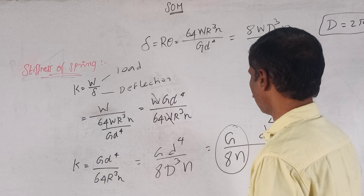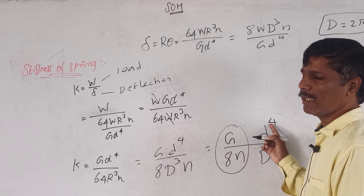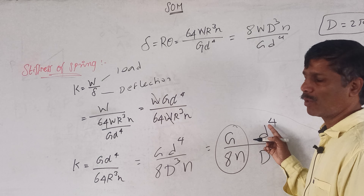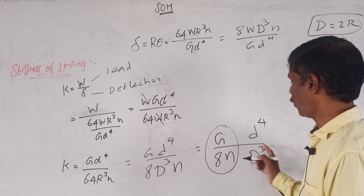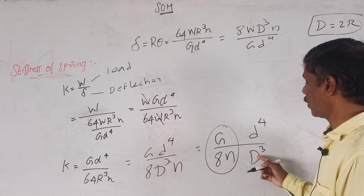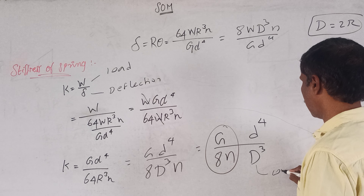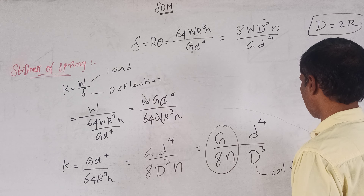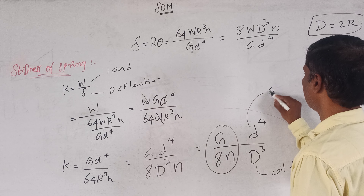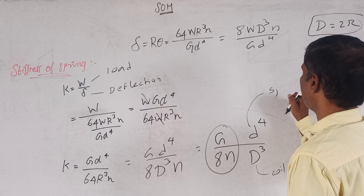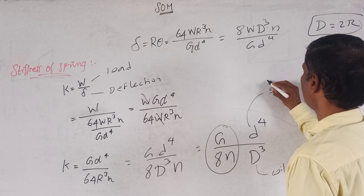So this is 4, 8 — easy to remember. If G is the main one, G is the rigidity modulus. 8 of the D — the coil diameter. This is the rigidity modulus, 8 of the mean coil diameter.